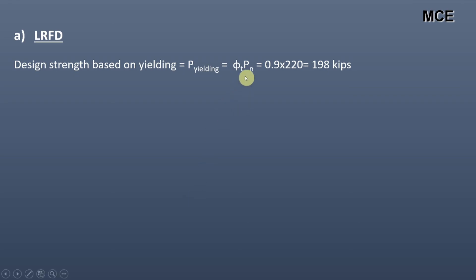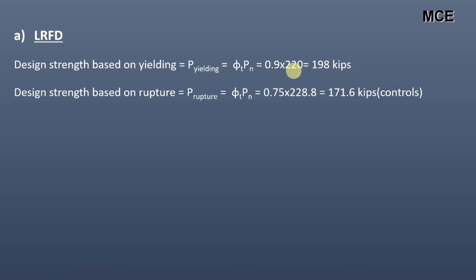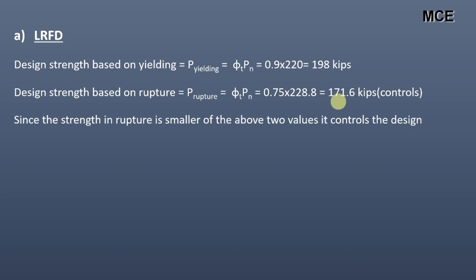For LRFD, the design strength based on yielding equals the resistance factor φ multiplied by the nominal yielding strength, which is 0.9 multiplied by 220, giving 198 kips. The design strength based on rupture equals φ for rupture multiplied by the nominal rupture strength, which is 0.75 multiplied by 228.8, giving 171.6 kips.